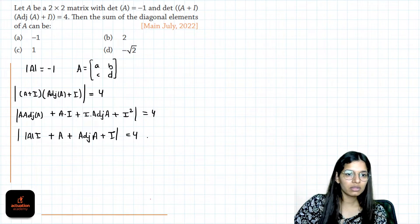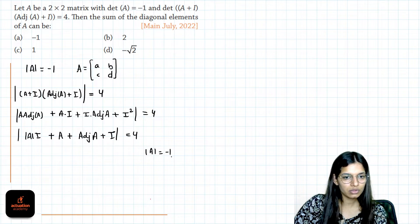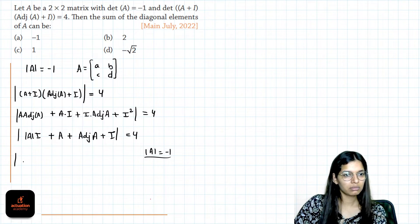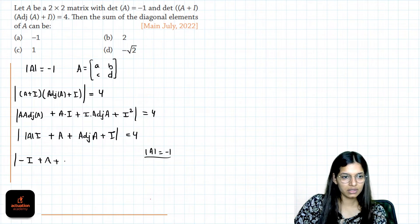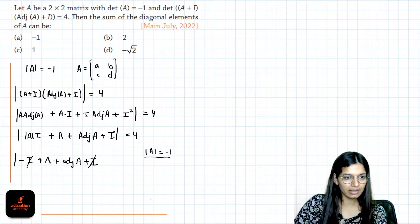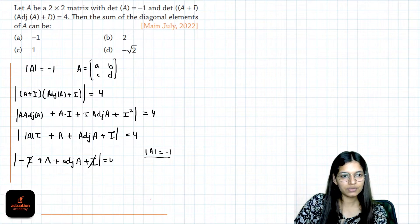But given determinant of A is minus 1, so it will be minus I plus A plus adjoint of A plus I. This will be cancelled out and this is given as 4.